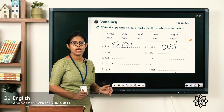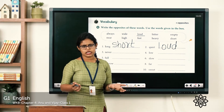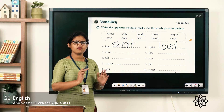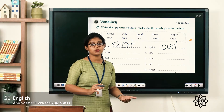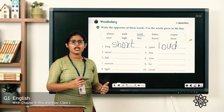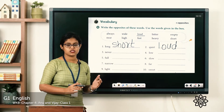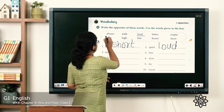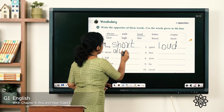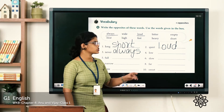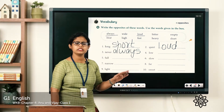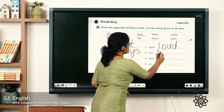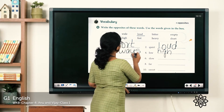Next, the third one: 'Never.' For example, 'I have never seen this picture anywhere' — I haven't seen it. What is the opposite word for never? 'I always like to do this' — always means all the time. So the opposite word for never is always: A-L-W-A-Y-S. What about the next one? 'Low' — low means less. The opposite word for low is high: H-I-G-H. Even the word is given here.